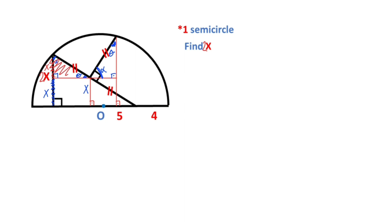Notice that this triangle and this triangle are congruent, because they have the same angles and the sides opposite the 90 degrees are equal. So if there's an x unit opposite theta, the side opposite theta must also equal x.